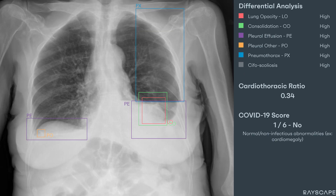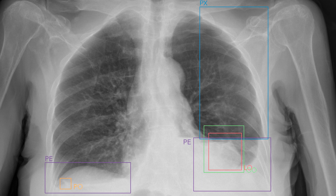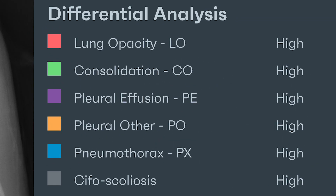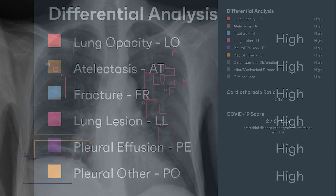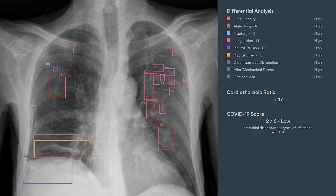Rayscape's AI algorithms can detect 148 anomalies on chest x-rays, including pneumothorax, pleural effusions, lung nodules, and fractures. Those pathologies are grouped into 17 different classes and localized on the image, helping the radiologist to output faster, precise results.